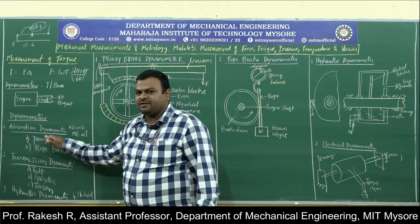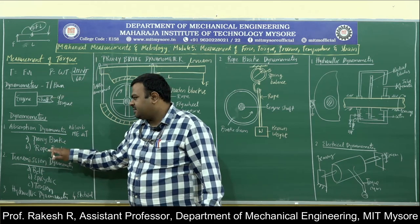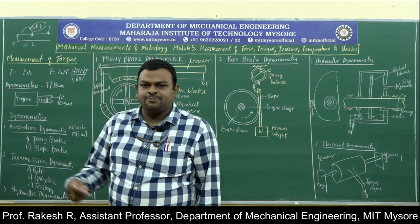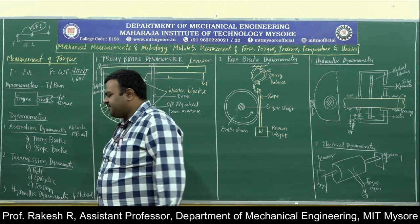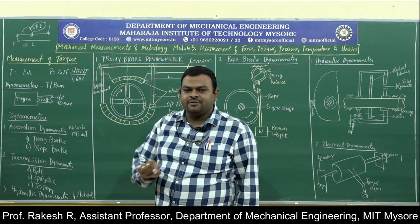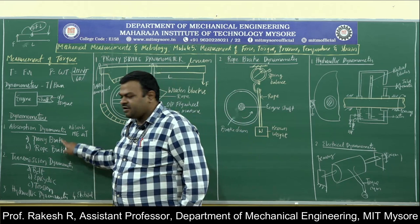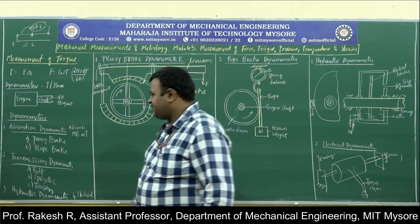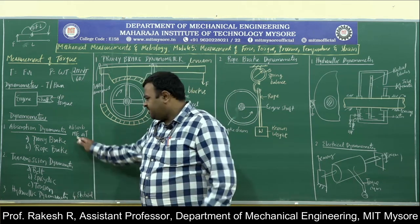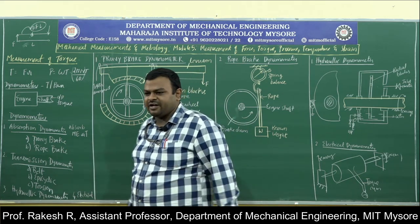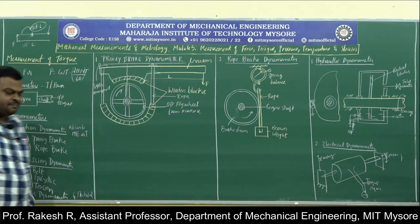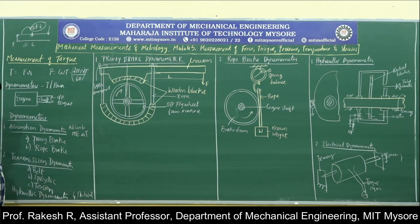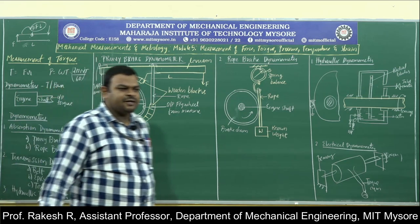In the syllabus, absorption dynamometer, Prony brake, and rope brake are mentioned. If asked to explain an absorption dynamometer with an example, define it and explain either one. Apart from these two, there are other dynamometers like hydraulic dynamometer and electrodynamometer. A hydraulic dynamometer measures torque where force is expressed in terms of hydraulic pressure. An electrical dynamometer directly gives power — it does not calculate torque directly.